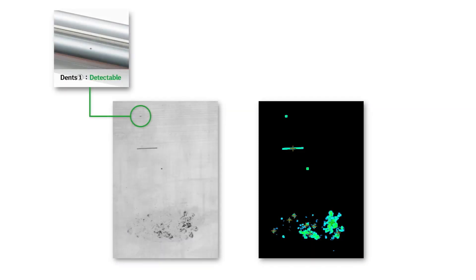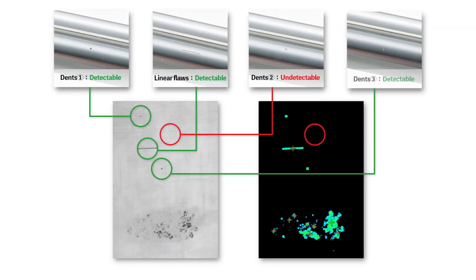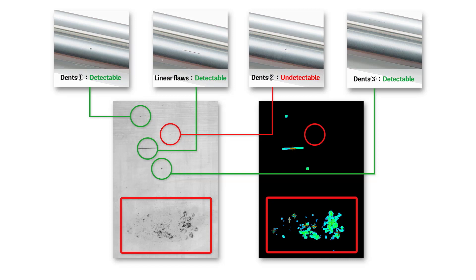As we look for the dents, many are detected, but some of the small dents may not be found. Additionally, at the bottom of the image, shading differences can interfere with stable detection of dents or scratches.